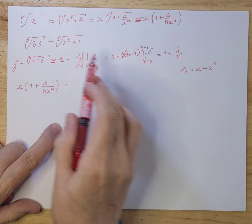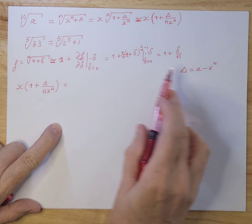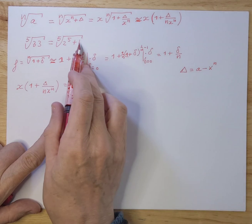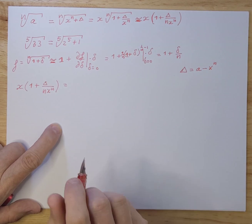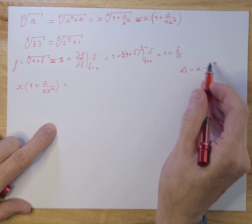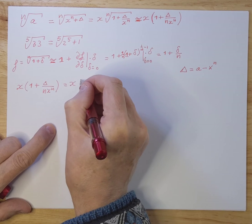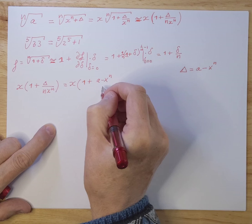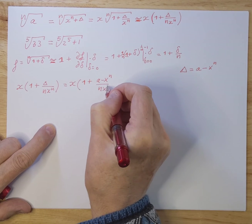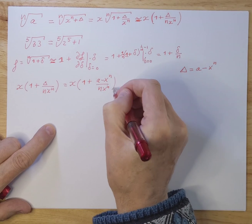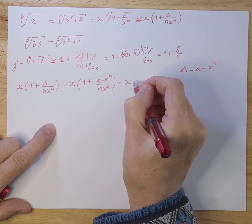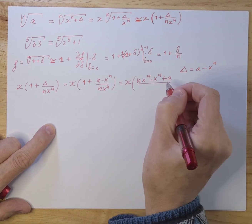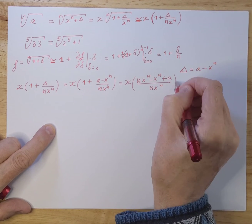Look at our example, delta is, a is 33 and we subtract 32 to the power of 5 and we're left with 1, which is exactly that one over there and that's the delta. So if we fill this out in here, we get x1 plus a minus x to the power of n divided by xn, n times x to the power of n. We can work that out a little bit more and we get x, n minus x, n plus a over nxn.